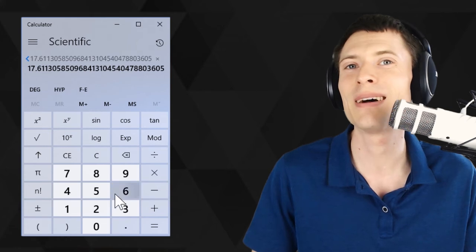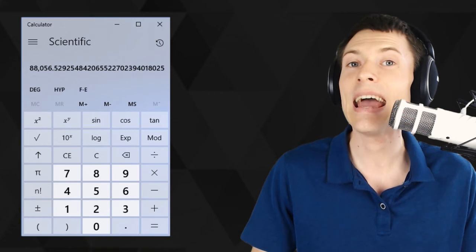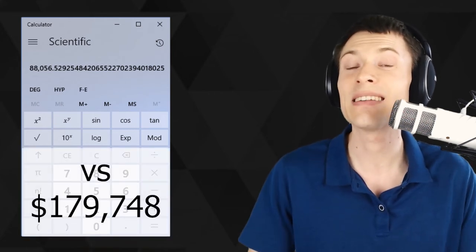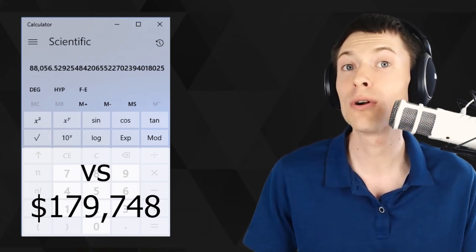That looks a lot lower. Let's multiply this by our investment, $5,000. And the total return over 30 years is $88,000. So $88,000 instead of almost $180,000, this is less than half the return simply by paying that fee once per month.